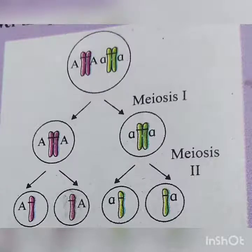Thus, each gamete contains only one chromosome from a pair. The nucleus of gametes contains chromosomes which carry all hereditary traits. Male and female gametes carry all the hereditary traits and are the link between parents and offspring. The fusion of haploid male gamete and haploid female gamete restores the diploid number of chromosomes of the species.